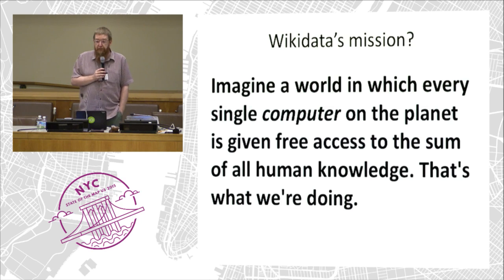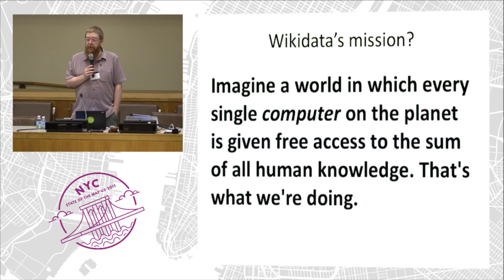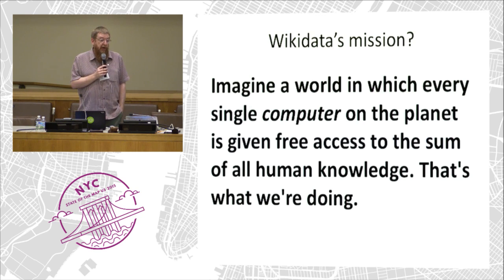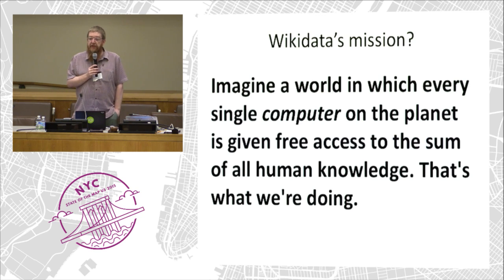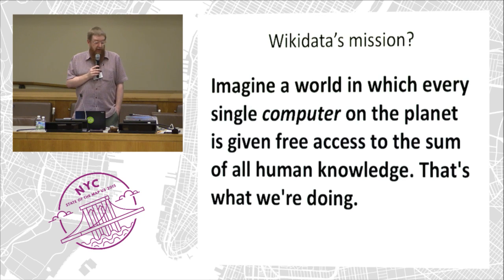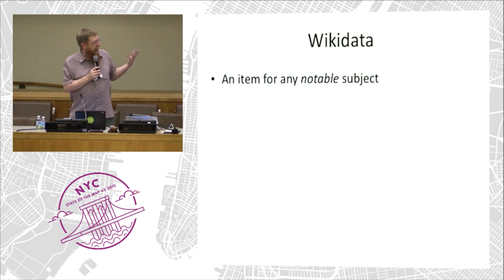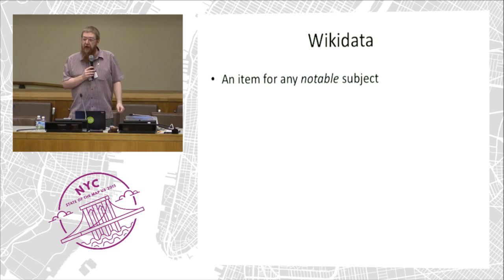Wikidata is a sister project of Wikipedia, hosted and looked after by the Wikimedia Foundation, like about a dozen other similar projects. And like Wikipedia, and indeed like OpenStreetMap, it is an open licensed — in this case PD licensed — collection of information put together by volunteer editors. Unlike Wikipedia, Wikidata is sets of statements of facts, very much like tags in OpenStreetMap. So it will say for a building, this is the architect, or this is the owner, or these are the coordinates.